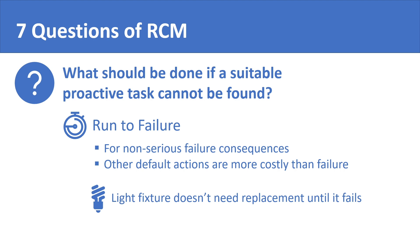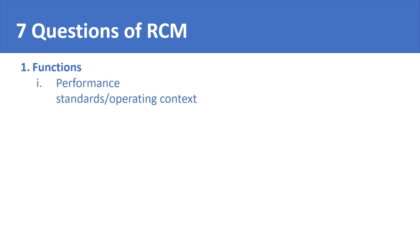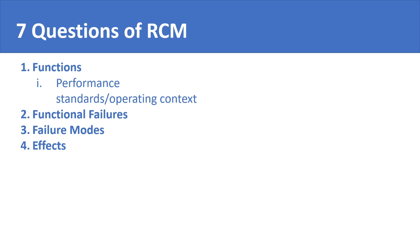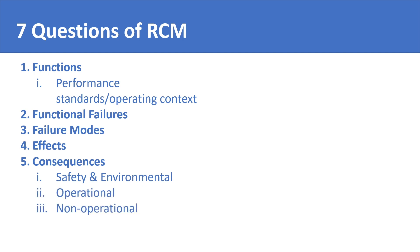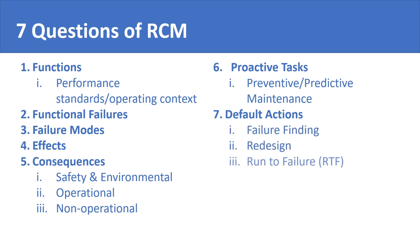To summarize the seven questions and seven steps of RCM: first, functions, which include performance standards in operating contexts; second, functional failures, which are the ways in which the equipment could fail; third, failure modes, which are the causes behind functional failures; fourth, effects, that is the failure effects; fifth, consequences, which could be safety, environmental, operational, or non-operational; sixth, proactive tasks, which include preventive and predictive maintenance programs; and seventh, default actions, which include failure finding, redesign, and run to failure or RTF tasks.